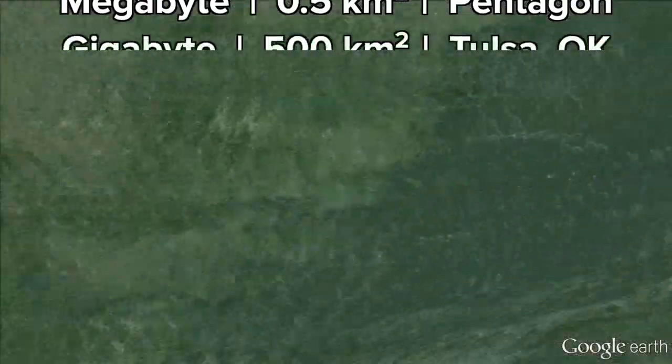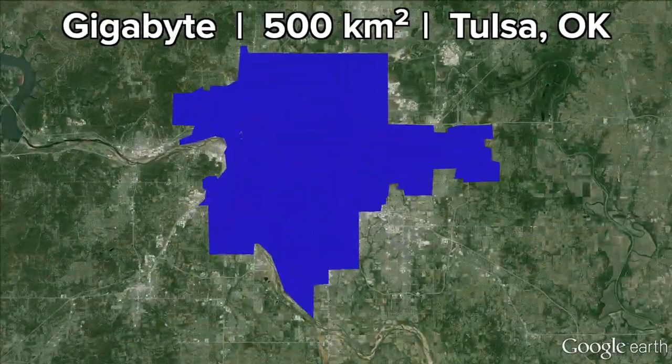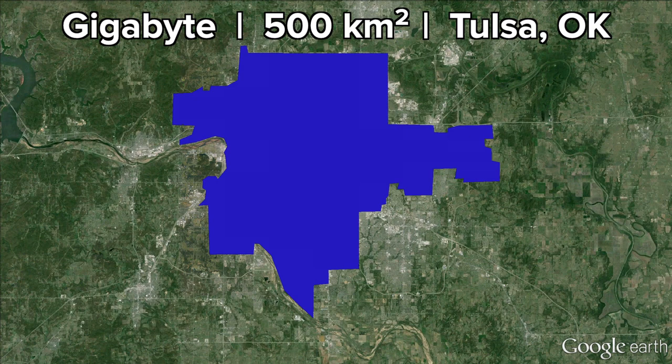A gigabyte is a thousand times bigger still, and is the size of Tulsa, Oklahoma, a fine town if there ever was one, and birthplace of Route 66. It has an area of about 500 square kilometers.